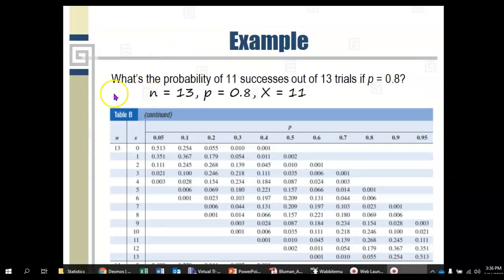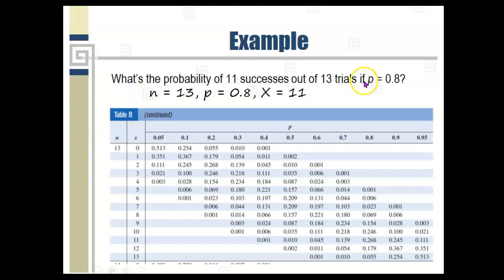So, in the example we've been doing, N is 13. So, we turn to the part of the table where N is 13. P is 0.8. So, we look at this column with the 0.8 at the top. And X is 11. So, we look at this row where X is 11. And we go across, we find the number that's in that row in that column, and that number is 0.268. So, that is the answer. That is the probability of getting 11 successes out of 13 trials if P is 0.8.